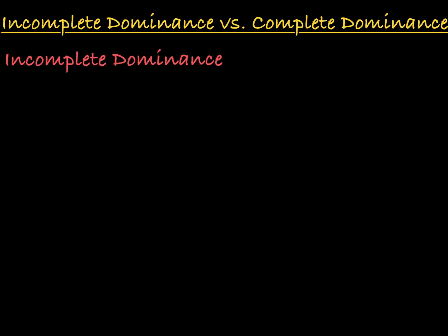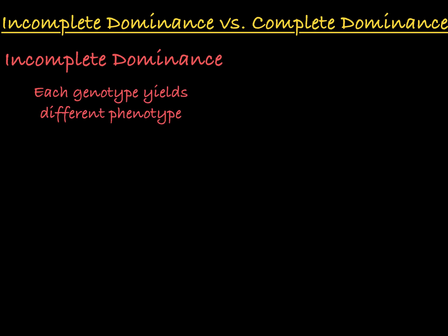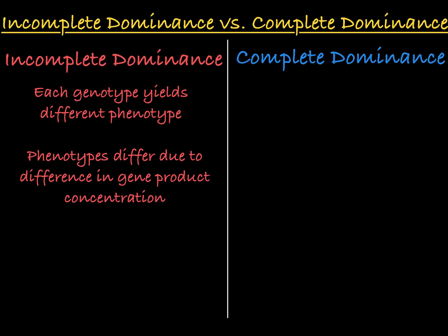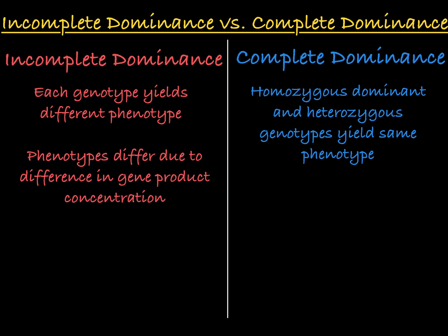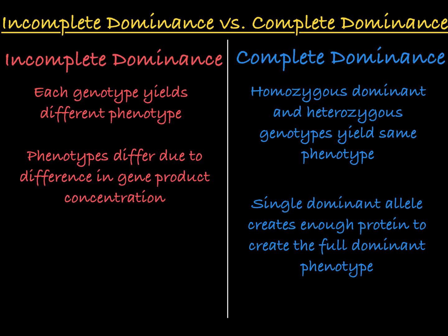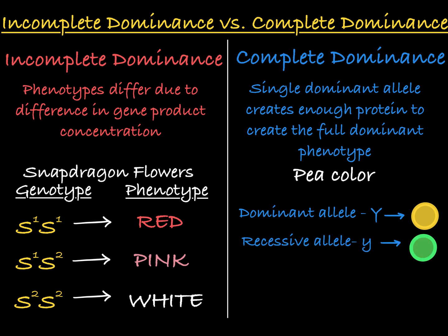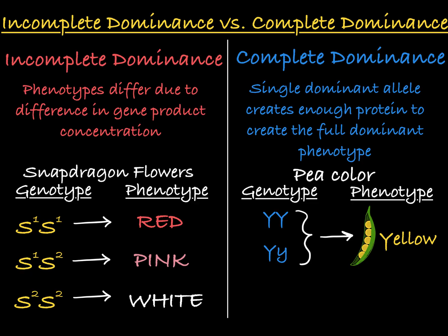Incomplete dominance differs from complete dominance in that, with incomplete dominance, each different genotype yields a different phenotype, and these phenotypes are dependent on the concentration of protein product produced from the genes. With complete dominance, the homozygous dominant and heterozygous genotypes yield the same phenotype, because a single dominant allele produces enough protein to create a full dominant phenotype. We see this in the gene that determines pea color in pea plants, where the dominant allele yields yellow pea color and the recessive allele yields green pea color. A single dominant allele produces enough enzyme to create the yellow pea phenotype, so both the heterozygote and the homozygous dominant genotype have the same yellow pea phenotype, and only the homozygous recessive genotype shows the recessive green pea phenotype.